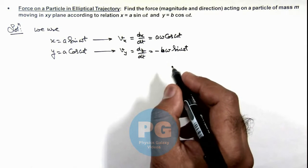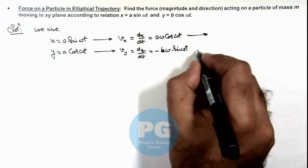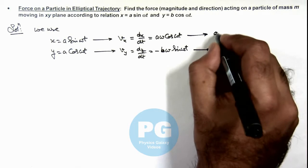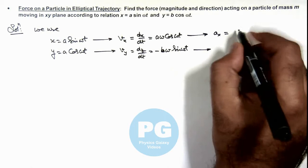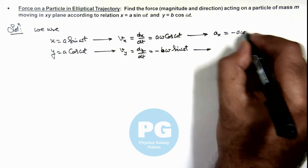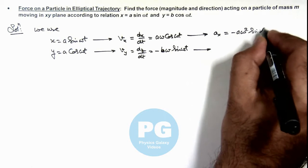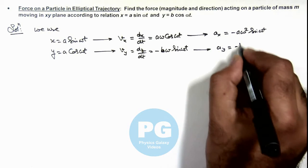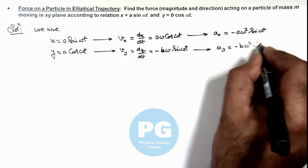Now if we further differentiate it, you can see acceleration in x direction would be minus a omega square sine omega t, and a_y is minus b omega square cosine omega t.